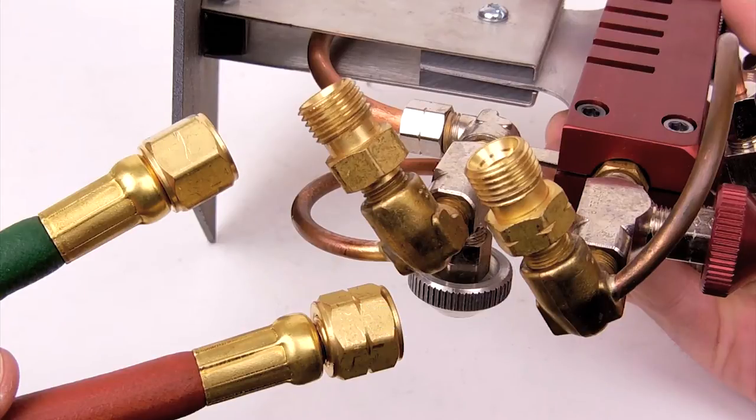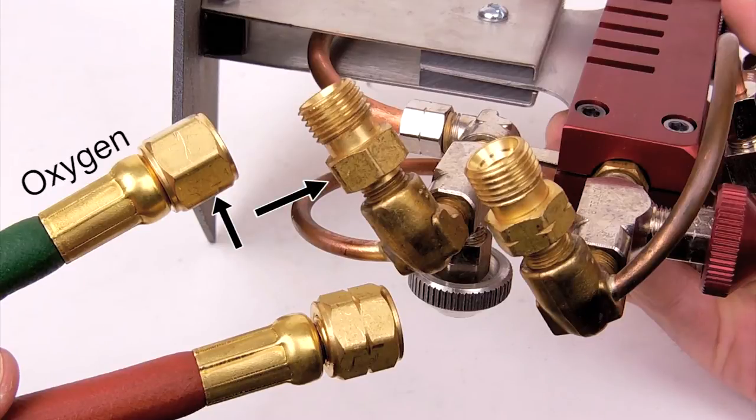The oxygen line on the T-style hose will be green. The fittings are smooth on the nut and do not have a notch. All oxygen fittings are right-hand thread, meaning they tighten in a clockwise direction.